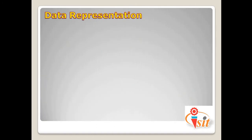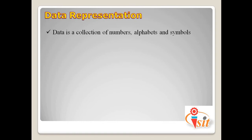First, we need to discuss data representation. Before that, we need to know what data means. Data is considered a collection of numbers, alphabets, and symbols combined to represent information. In a computer system, data means a combination of numbers, alphabets, or symbols. A computer takes raw data as input and after processing produces refined data as output.